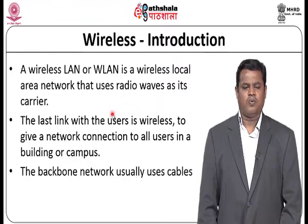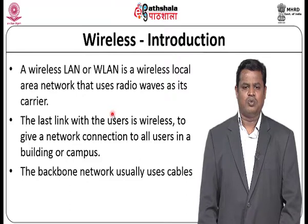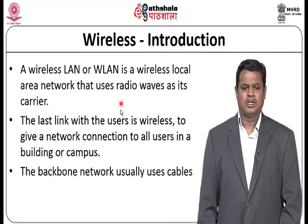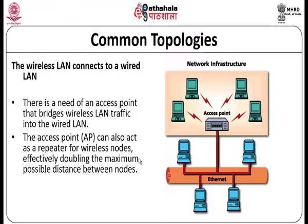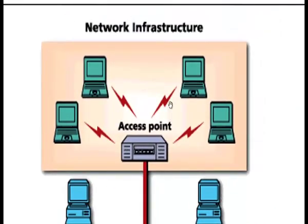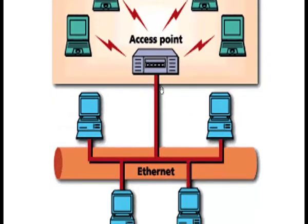There are various advantages of wireless LAN. Mobility is one key feature — people are free to move around the network without losing connectivity. The last link with the end user is wireless, giving network connections to all users in a building or campus. Usually these wireless LAN networks are connected to a backbone network using cables. The common topology is a WLAN connected to a wired network, where wireless nodes connect to an access point, and through this access point they connect to an ethernet or internet network.